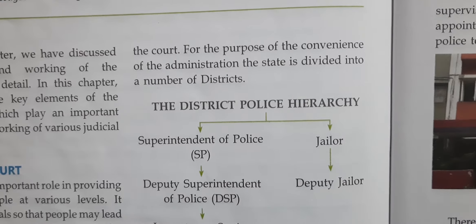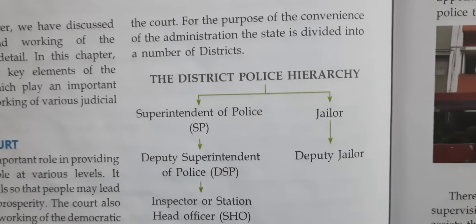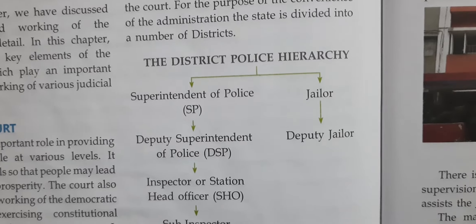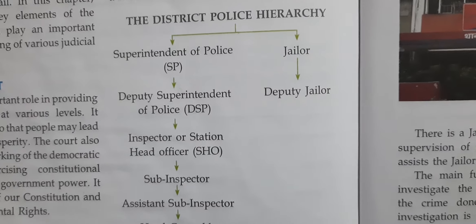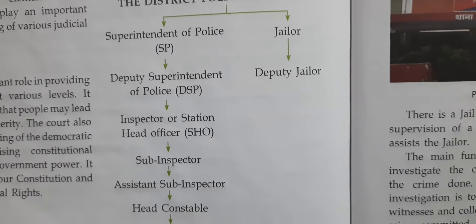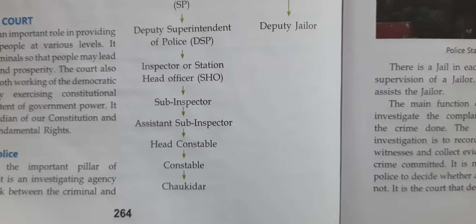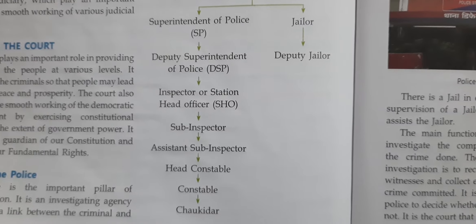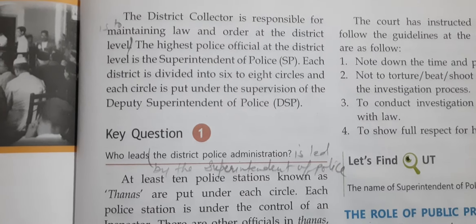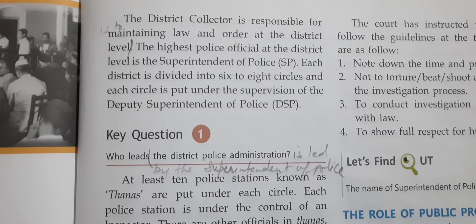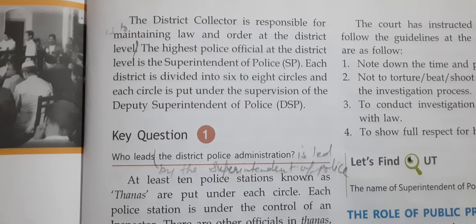The district is divided and here are some reports from the police. Police officials include: Superintendent of Police, Deputy Superintendent of Police, Inspector or Station Head Officer, Sub Inspector, Assistant Sub Inspector, Head Constable, Constable, and Chaukidar. The district collector is responsible for maintaining law and order at the district level. The highest police official at the district level is the Superintendent of Police. Each district is divided into six to eight circles, each under the supervision of the Deputy Superintendent of Police.